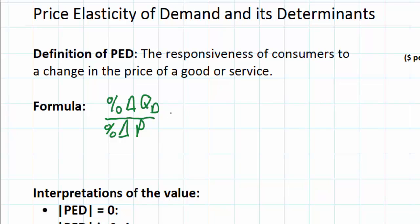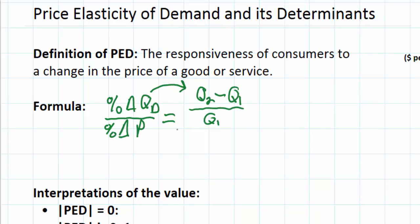If you aren't given percentage changes in price and quantity, you'll have to calculate them. The simple method takes the new quantity Q2 resulting from a price change, subtracts the original quantity Q1, and divides by Q1 to give the percent change in quantity demanded. Then we divide that by the percentage change in price: the new price minus the original price, divided by the original price.